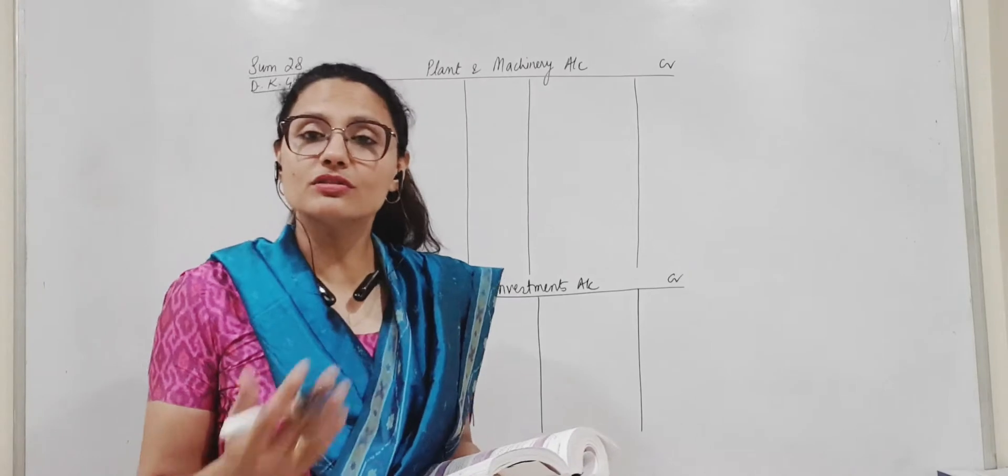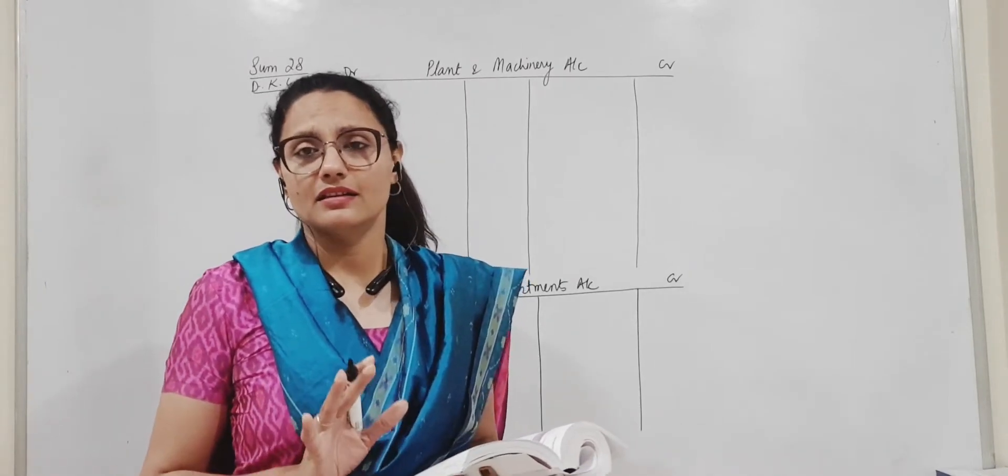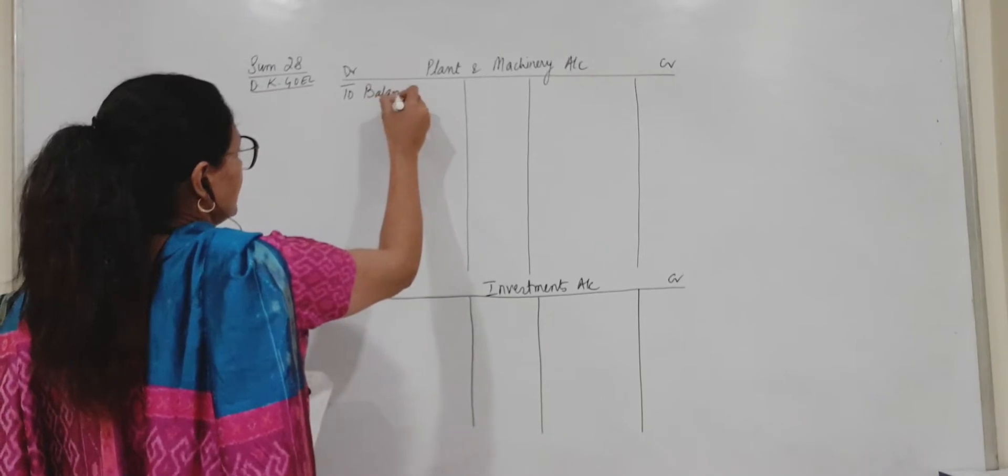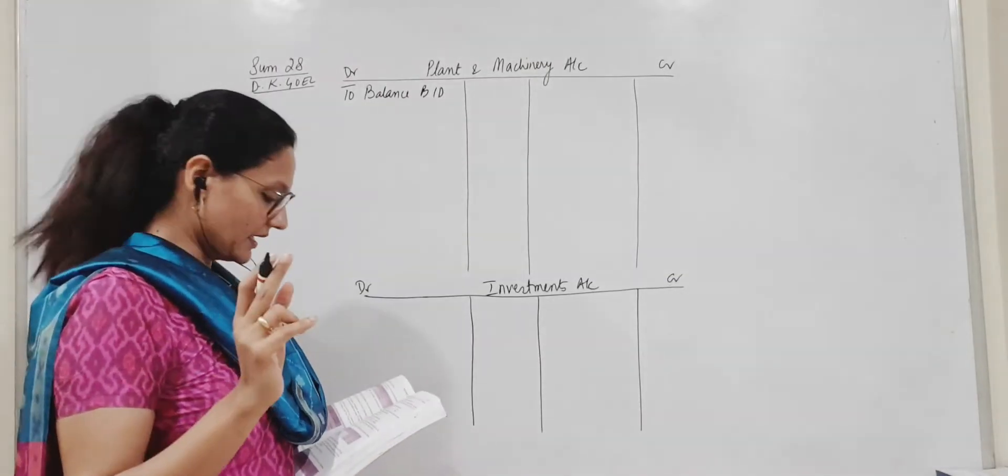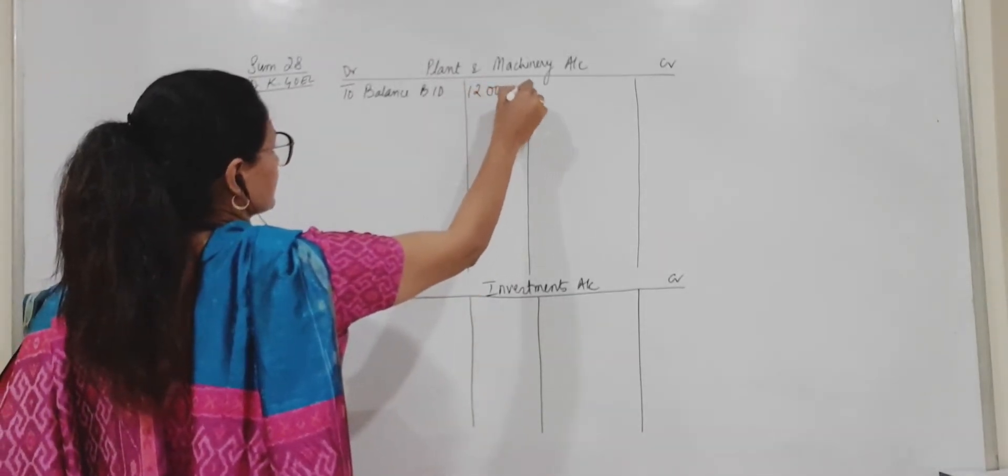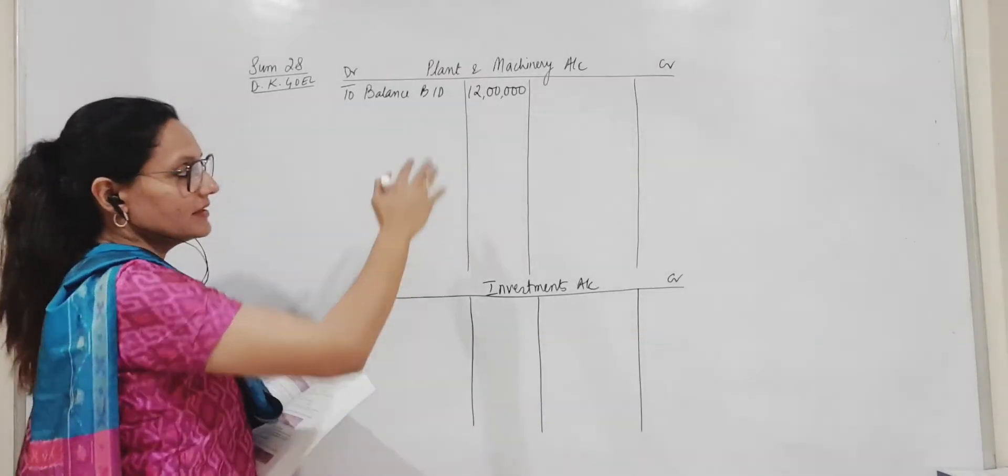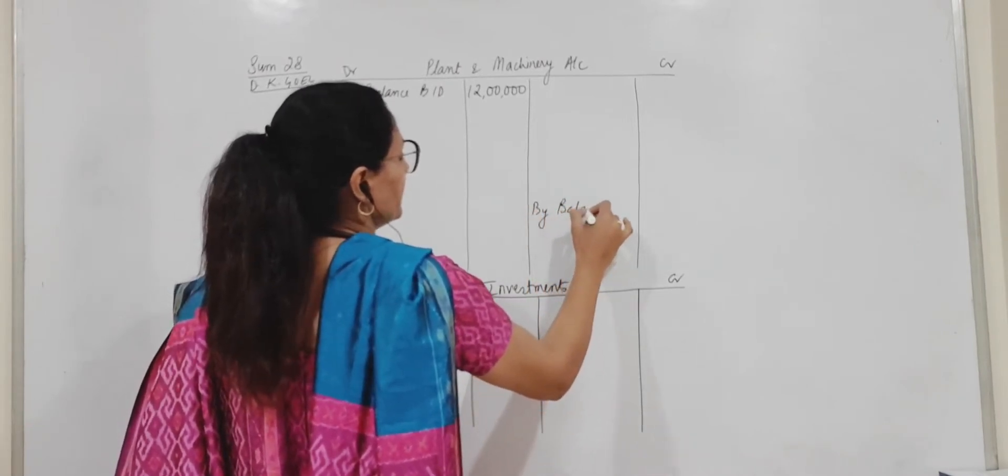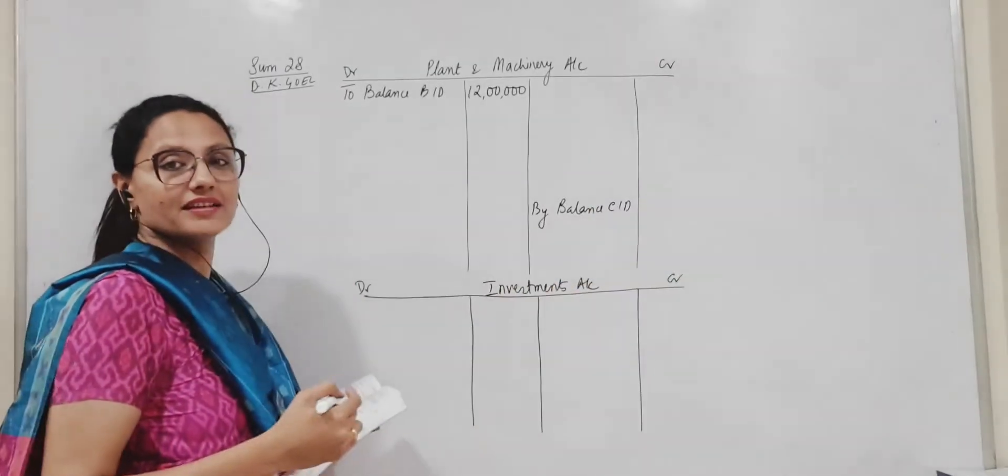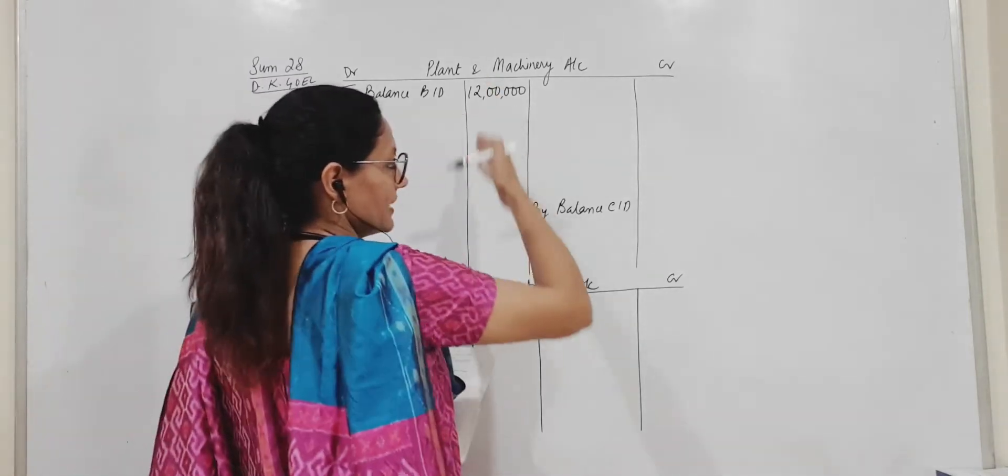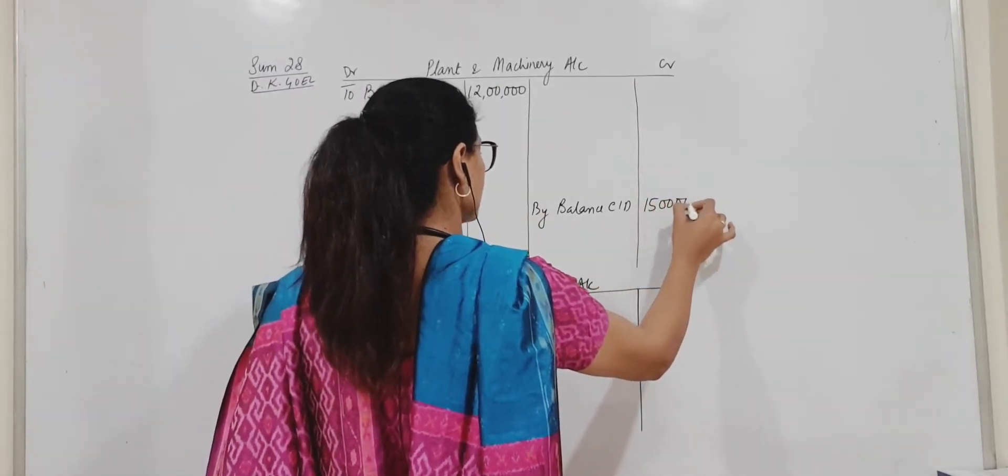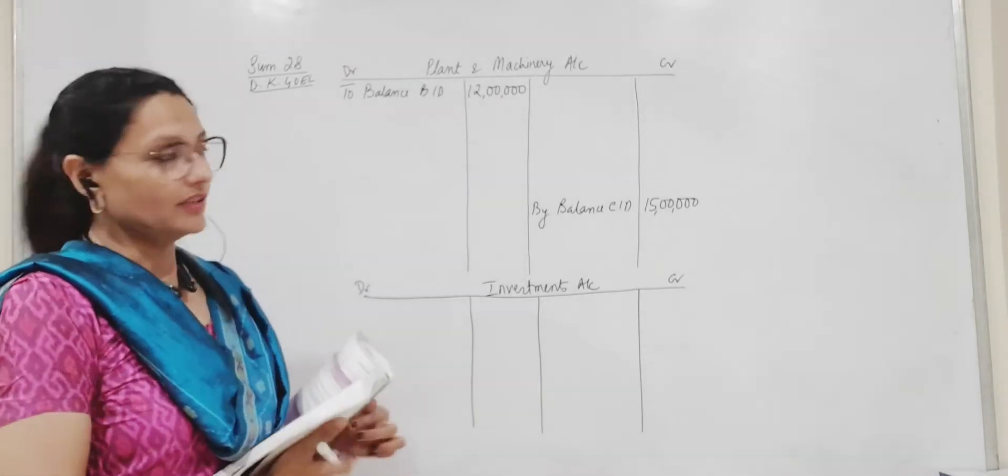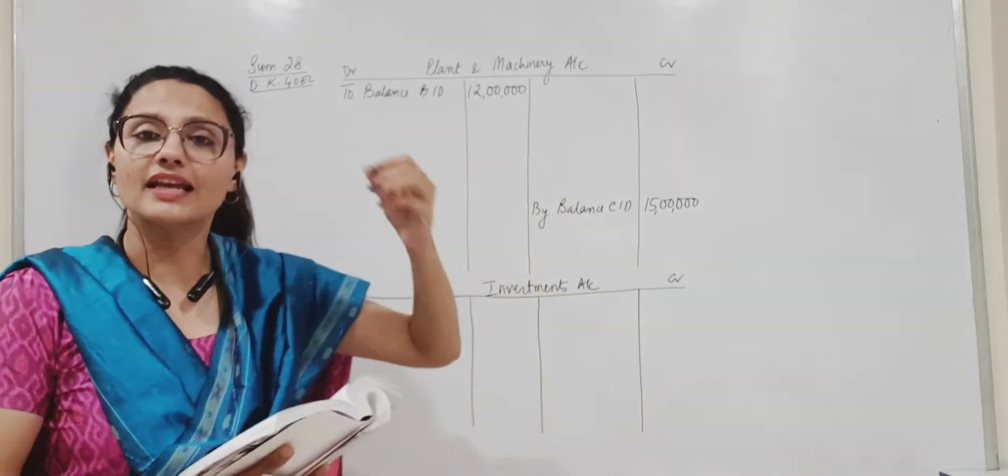So whenever you have a sum like this kindly open the ledger account. So plant and machinery account. First I am going to do what is given in this sum. So opening balance as you know all assets have a debit balance. To balance brought down. This will be the opening balance which is 12 lakhs. Leave a few lines here for the other entries to come here. Leave 4 lines. By balance carry down. Why am I putting it in here? Obviously the assets will have a closing balance on this side because debits are more than credits. So here you have 15 lakhs. This is 31st March 18 figure. These two things will have this fixed place. Opening balance is clear. Closing balance is clear. Without exception.